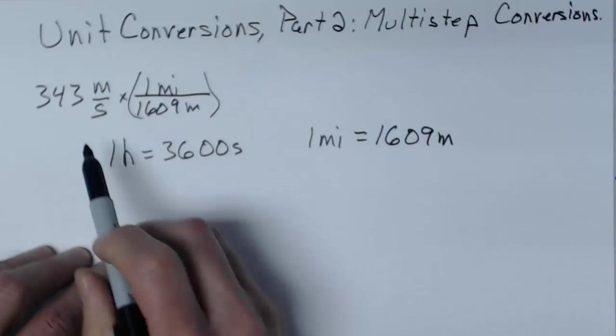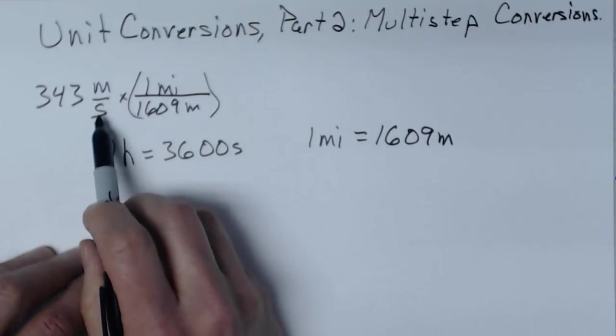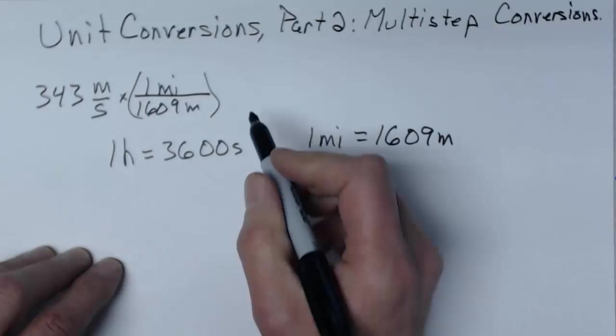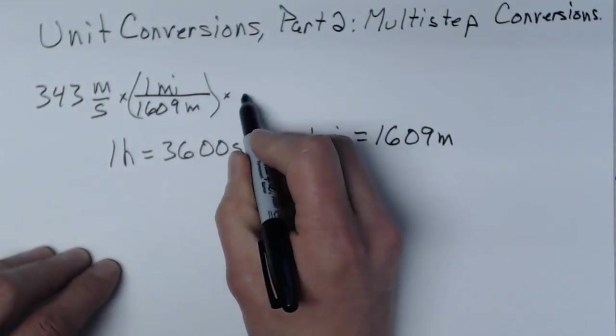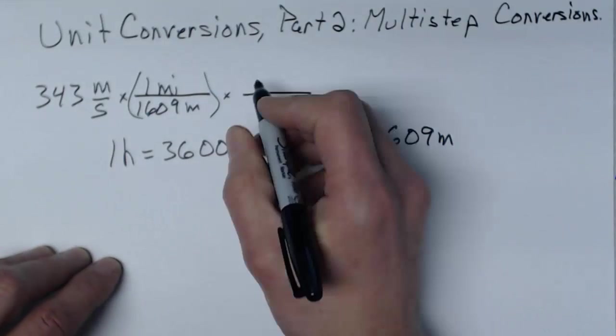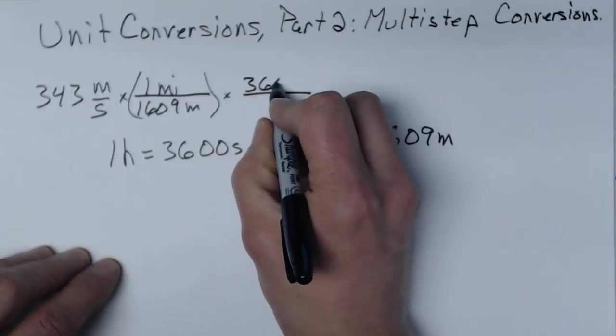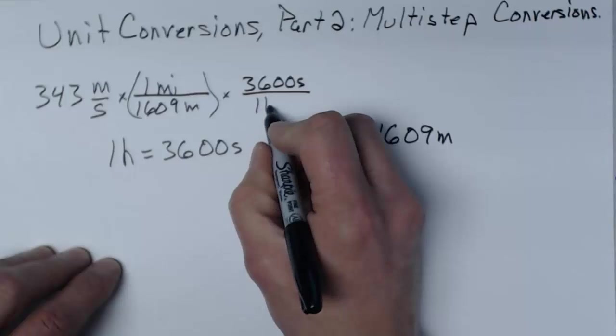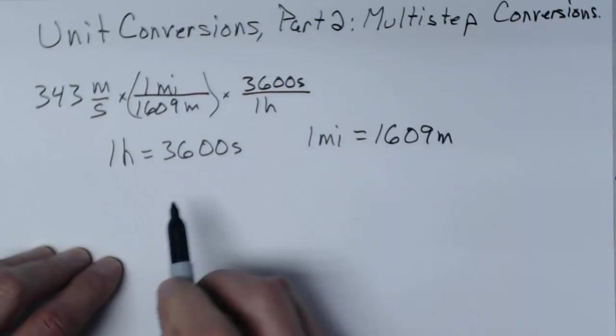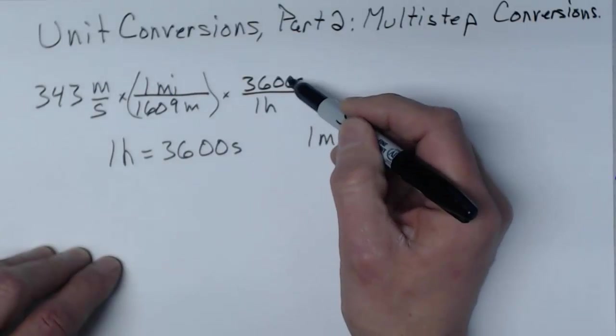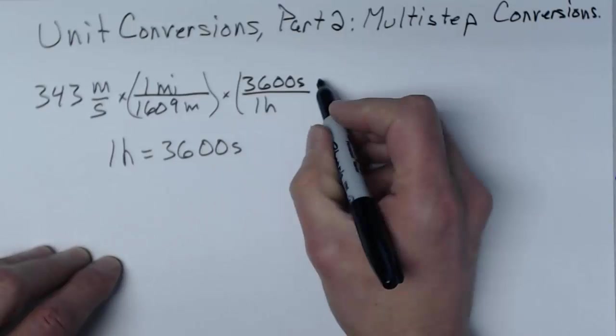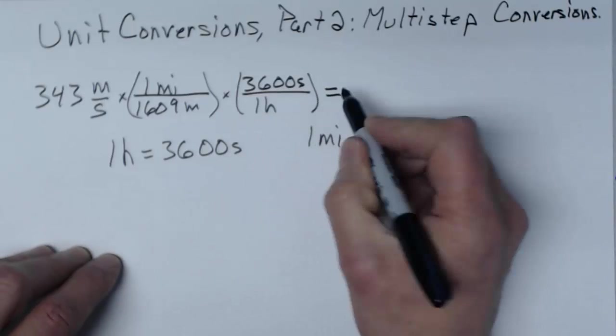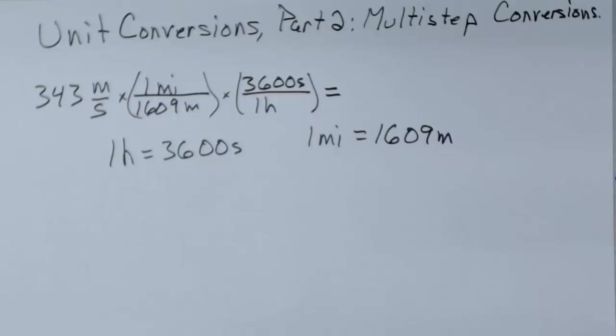Now let's get rid of the seconds. The seconds are in the bottom here. They'll have to go on the top of my conversion factor. So the 3600 seconds here has to go on top. The one hour will go on the bottom. Since these two things are equal, if I divide one by the other I get one. And there's my second funny looking one.